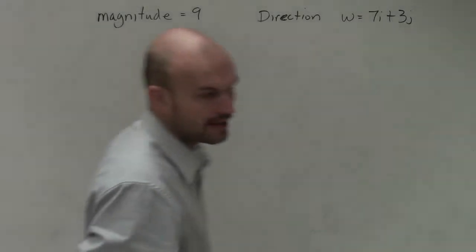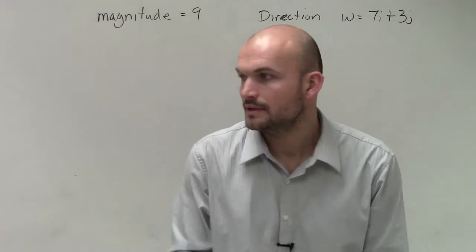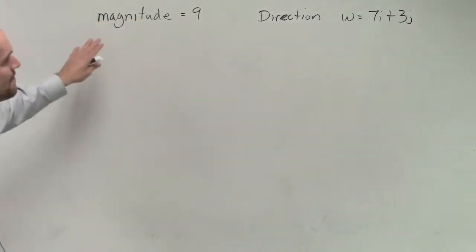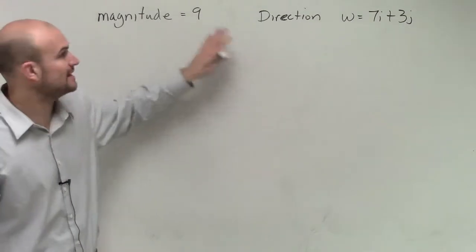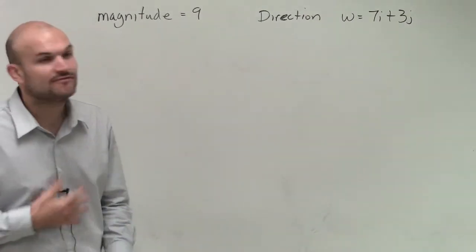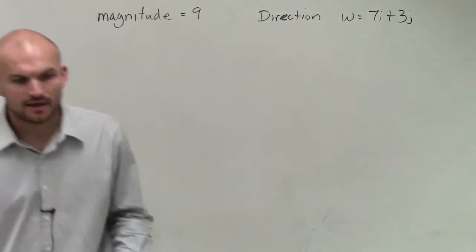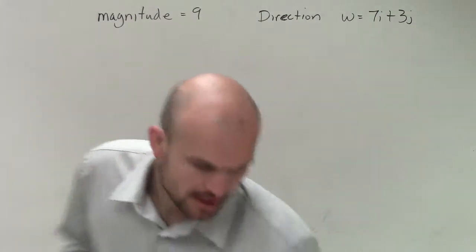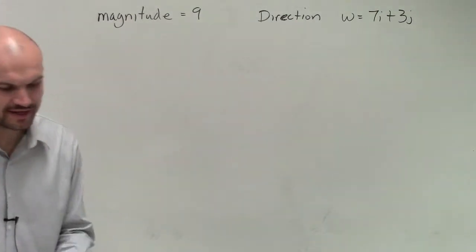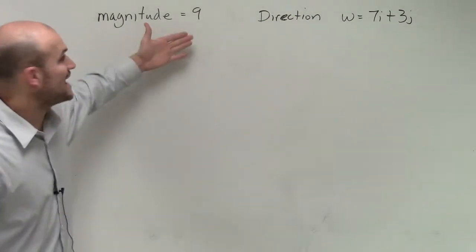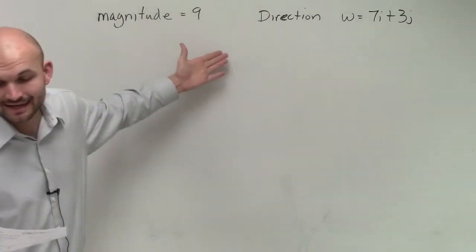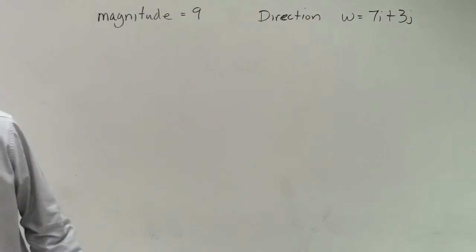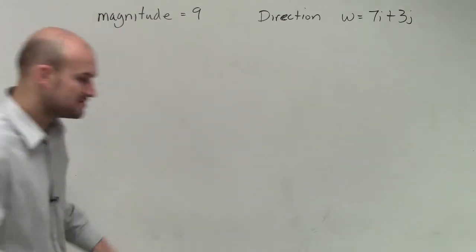Let's take a look at this. We have a vector v that has a magnitude of 9, and what we want to do is write the vector v in component form when it has a magnitude of 9, but it's in the same direction as 7i plus 3j.